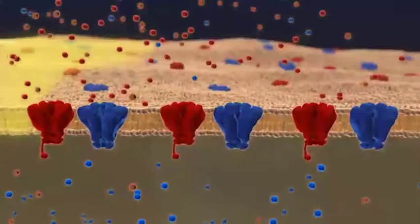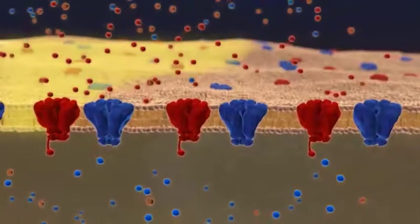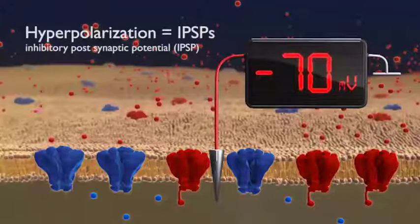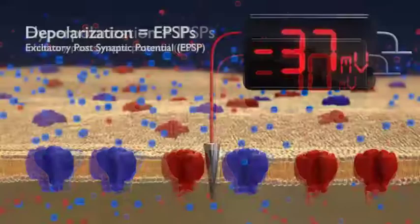The neuron's membrane potential can change from resting toward a state of inhibition, known as hyperpolarization, or toward a state of action, known as depolarization.